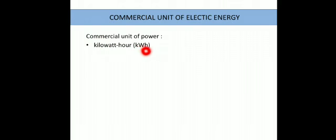Small k, capital W and H. So this is known as commercial unit of watt because in our houses, the electricity that we consume that is counted in this unit, kilowatt hours. How many kilowatt hours, how many kilowatt we have consumed in one hour, that is how it is done.